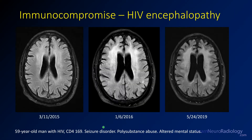Moving forward in time, you can see this actually progress. The initial images are from 2015. About nine months later, the white matter abnormality is getting worse with progressive volume loss — the ventricles are enlarging. Another couple of years on, the white matter is now diffusely abnormal in all paraventricular regions and volume loss is worse. This is what HIV encephalopathy looks like: symmetric, bilateral, progressing with time.